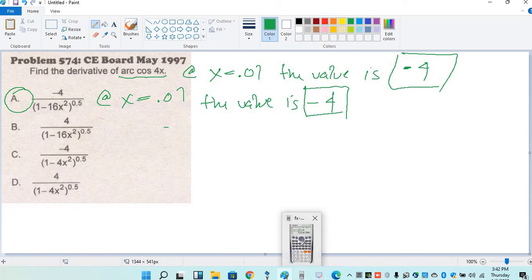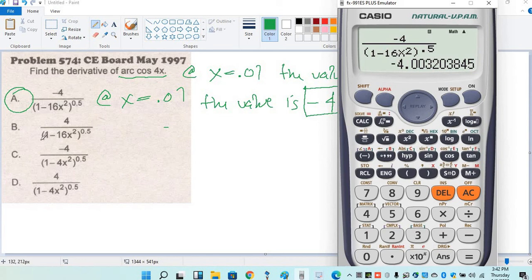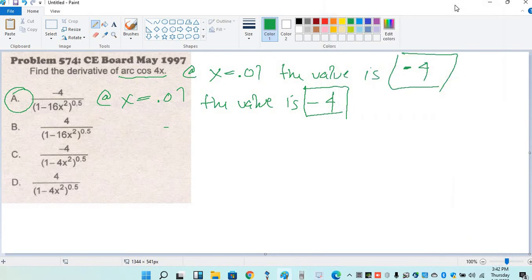Let's say for option B. Option B is positive 4. Calc x 0.01, equal, positive 4. This is positive 4, meaning this is wrong.